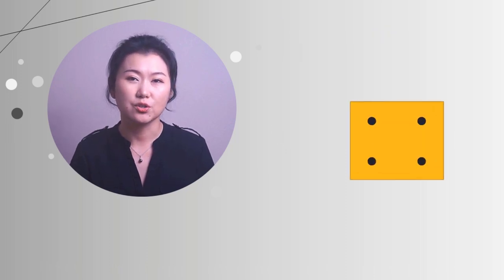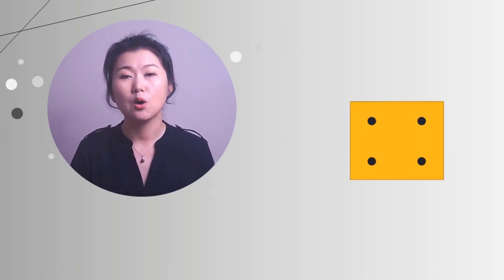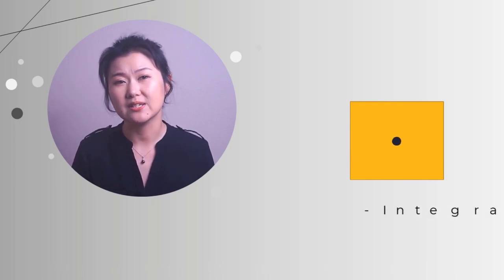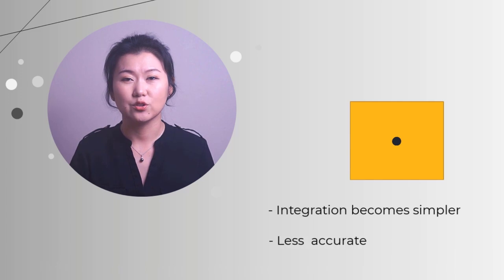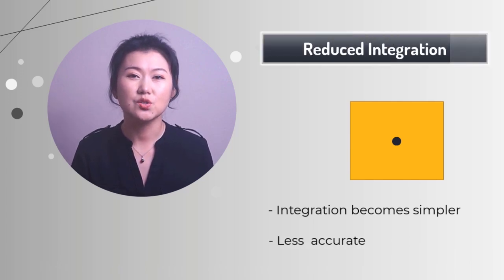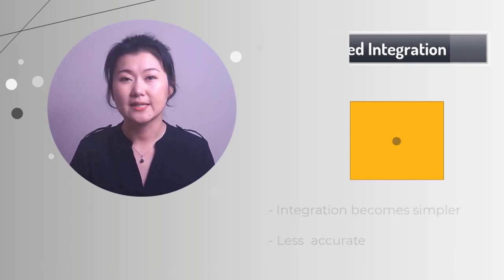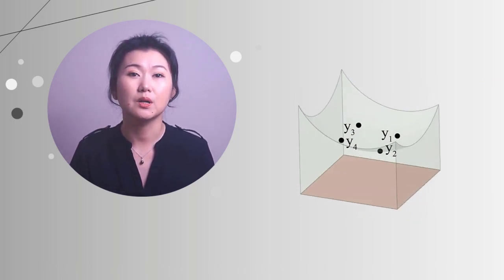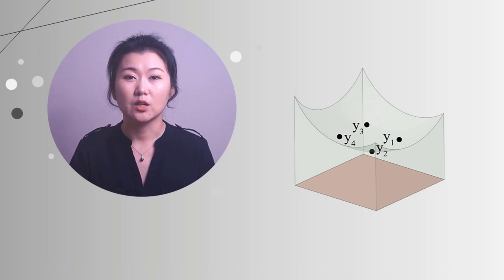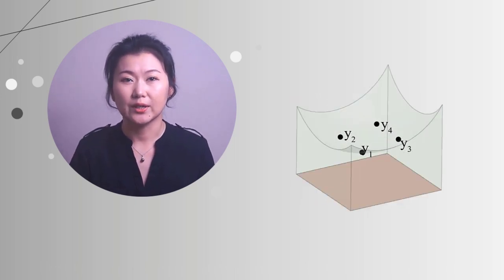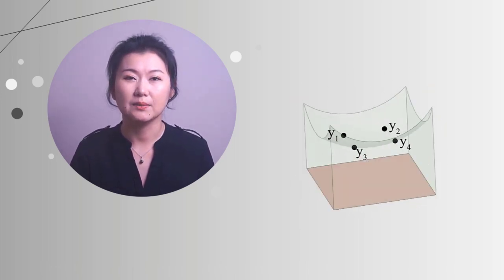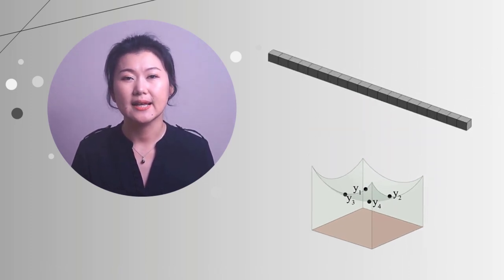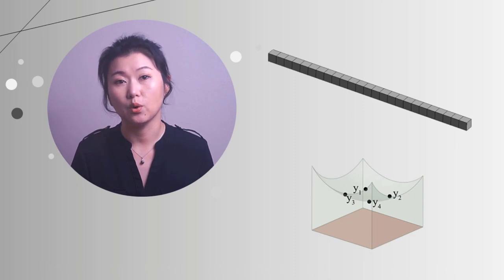Instead of using four integration points in this example, how about we just use one integration point? This way, the integration becomes even simpler and, of course, less accurate. We call this reduced integration. In a real finite element application, the equation for integration over one element usually will not be so dramatic. Also, the smaller the element size is, the more accurate the integration will be.